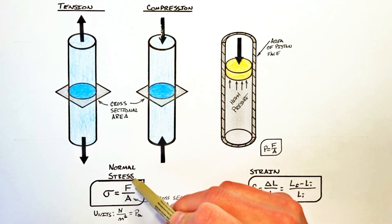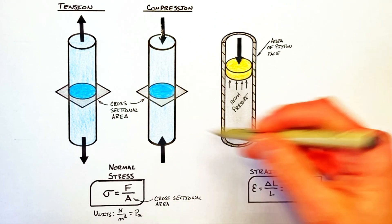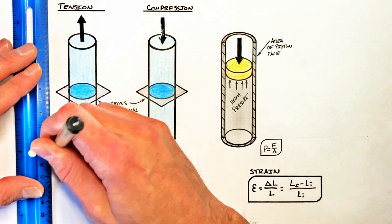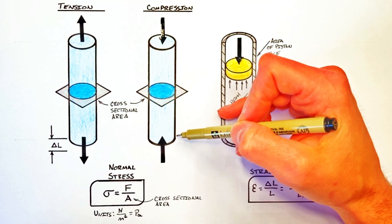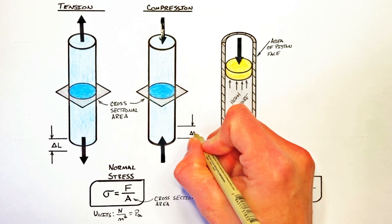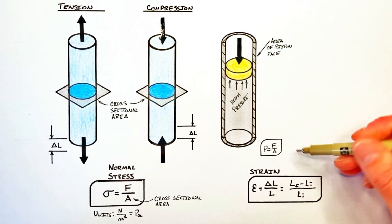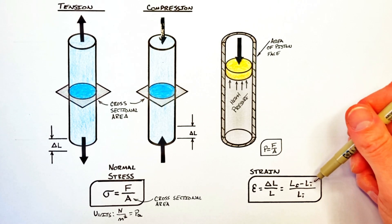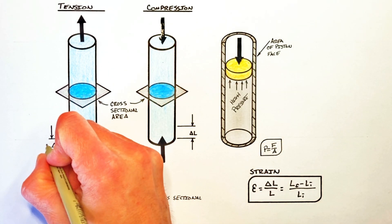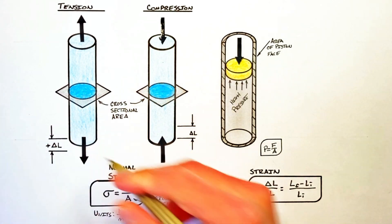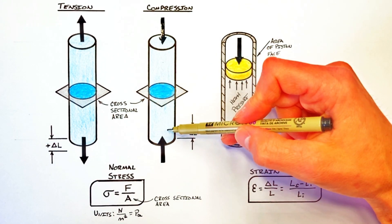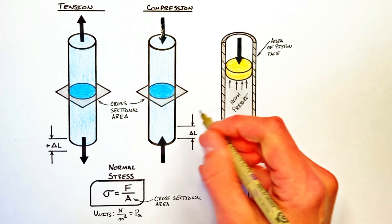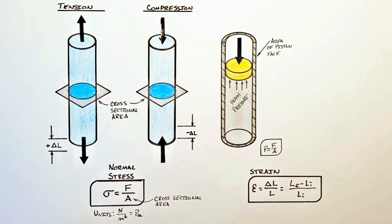Anytime we subject a part to a stress, it's going to experience a strain. If we try to stretch a part or place it under tension, it's going to increase in length. If we compress a part, it's going to experience a decrease in length. If a part is stretched under tension, the final length is greater than the initial length, which means the change in length and therefore the strain is positive. If we put a part under compression, it gets shorter, so the final length is less than the initial length, leaving us with a negative change in length and therefore a negative strain.